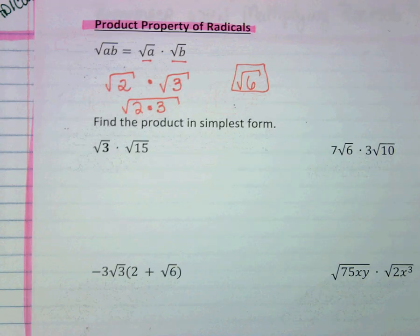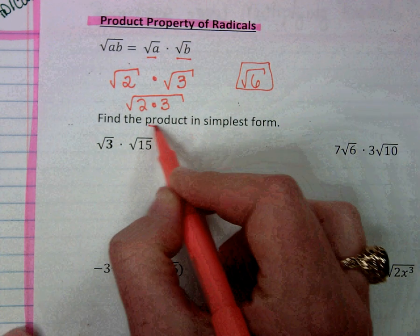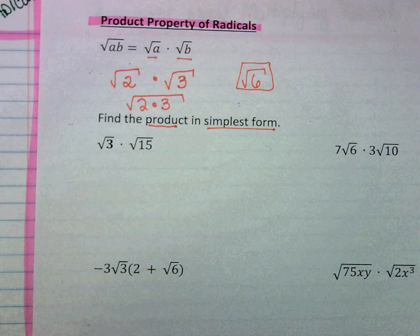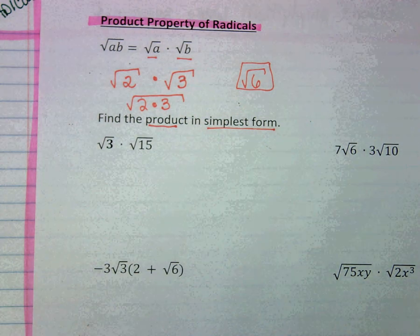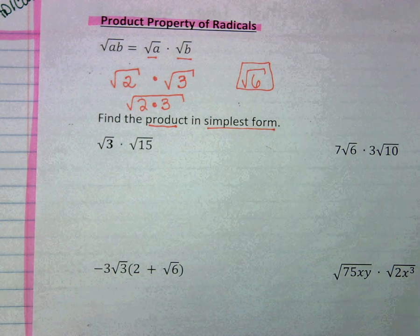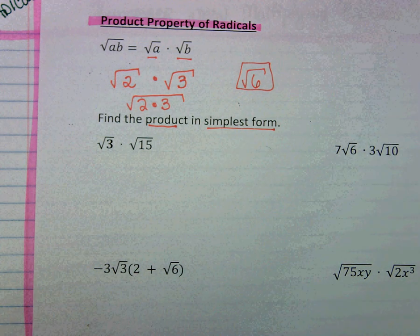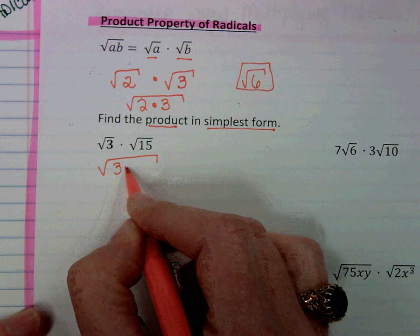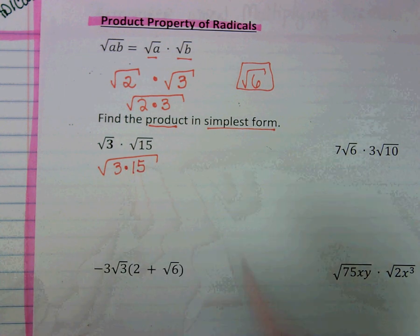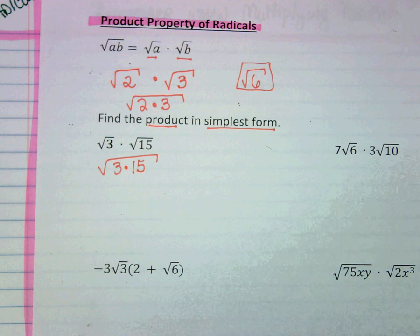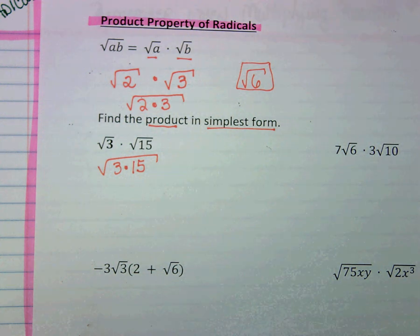So let's find the product of these expressions in simplest form. For the first example, it's the square root of 3 times the square root of 15. Now we can approach it two ways. If we want to go ahead and put it underneath the same radical sign, we have two options from here.